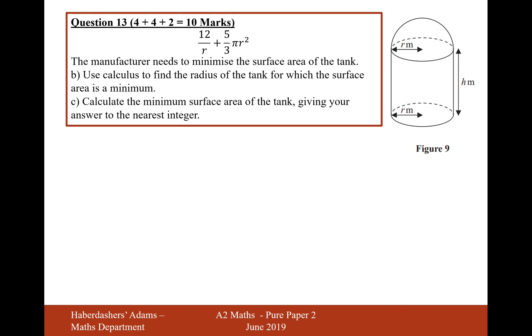Let's now move on to part B. The manufacturer needs to minimize the surface area of the tank. Use calculus to find the radius of the tank for which the surface area will be a minimum. If we want to find a minimum, we should differentiate. d of the surface area over dr is going to equal, 12r to the minus 1, we'll treat this as, and then differentiate it.